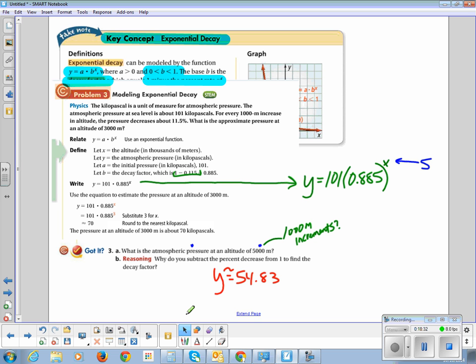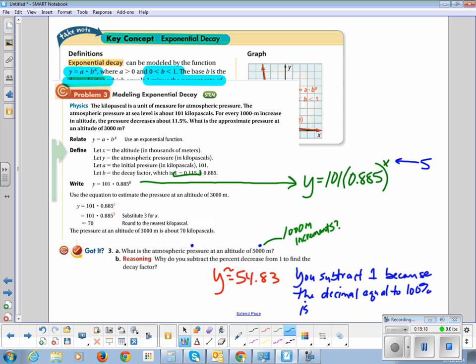Why do you subtract the percent decrease from 1 to find the decay factor? So we better answer that. Let's do it in a complete sentence. You subtract 1 because the decimal equal to 100% is 1.